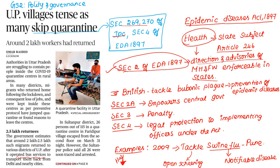This Act is from the British period. Under Section 2, the Central Government has the power to control the disease. Section 3 deals with penalties for those who violate guidelines. Section 4 provides legal protection to implementing officers under the Act.